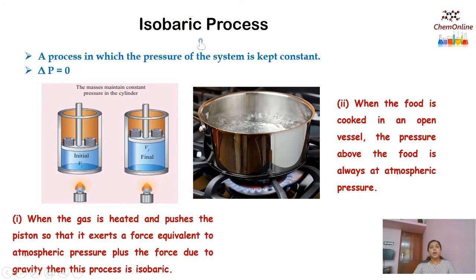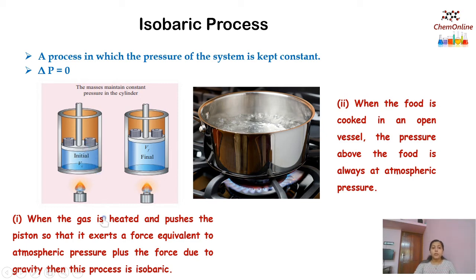Next is isobaric process. A process in which the pressure of the system is kept constant is called an isobaric process. Delta P equals 0, that is, the change in pressure is 0. In this image, you can see that some weight or mass is kept on top in order to maintain constant pressure in the cylinder. When the gas is heated and pushes the piston, it exerts a force equivalent to atmospheric pressure plus the force due to gravity. Since we have kept masses or weight on top, the pressure remains constant, but as the piston moves in or out, the volume will change.